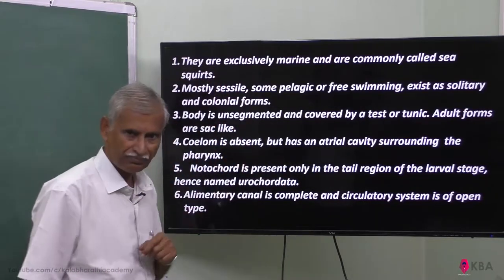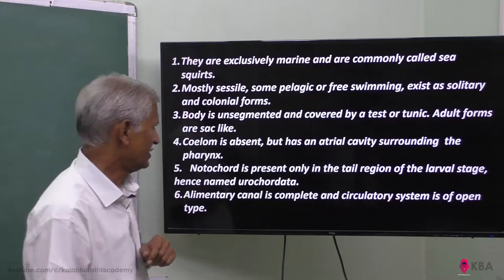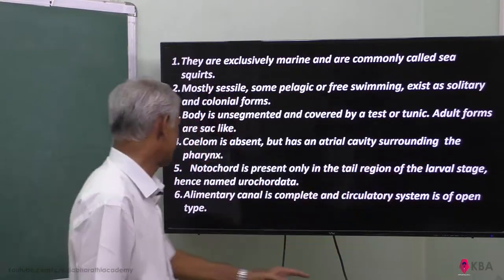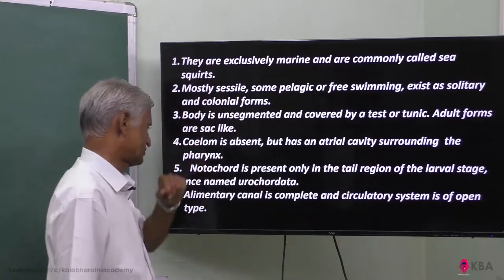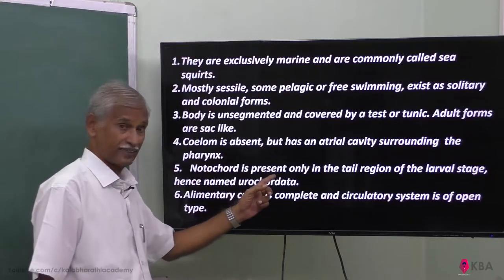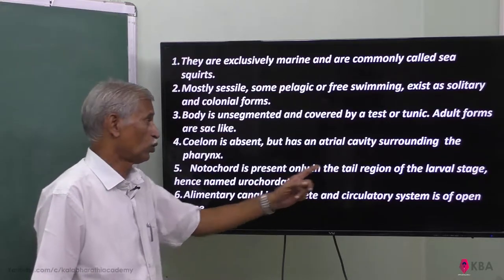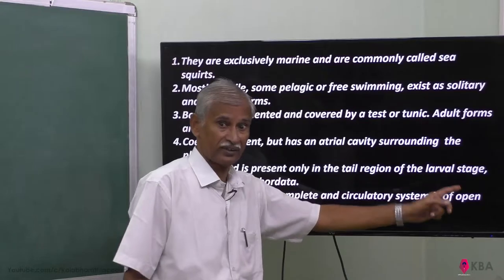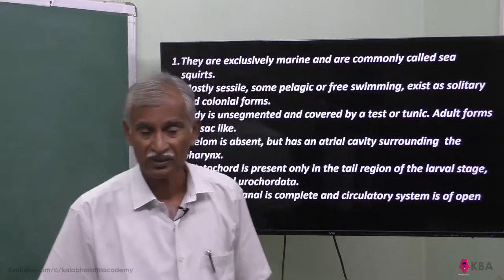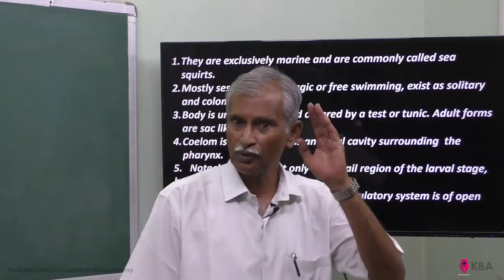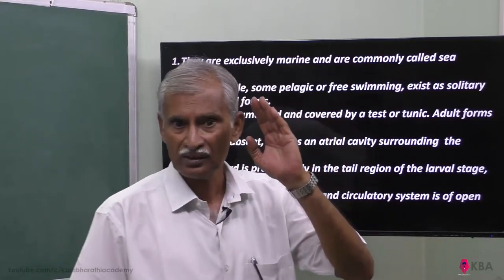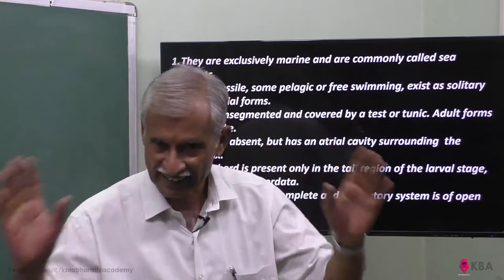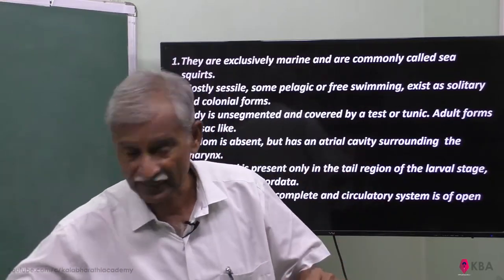Coelom is absent. There is an atrial cavity surrounding the pharynx. Notochord is present only in the tail region of the larval stage. In the larval stage, from anterior end to posterior end, the notochord is found only at the tail region.